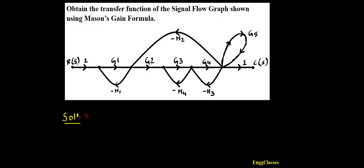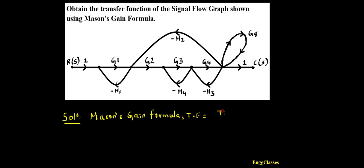I need to find the transfer function using Mason's gain formula. Let me write the Mason's gain formula. The expression for the transfer function using Mason's gain formula is equal to the sum of T_k times Δ_k, divided by Δ.